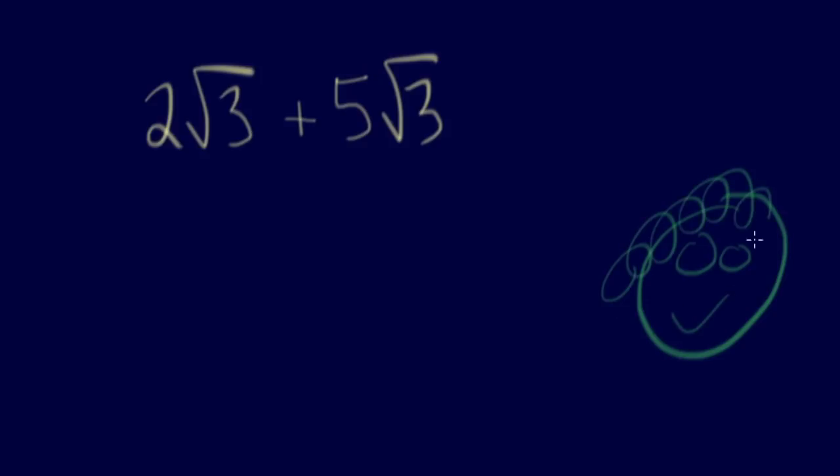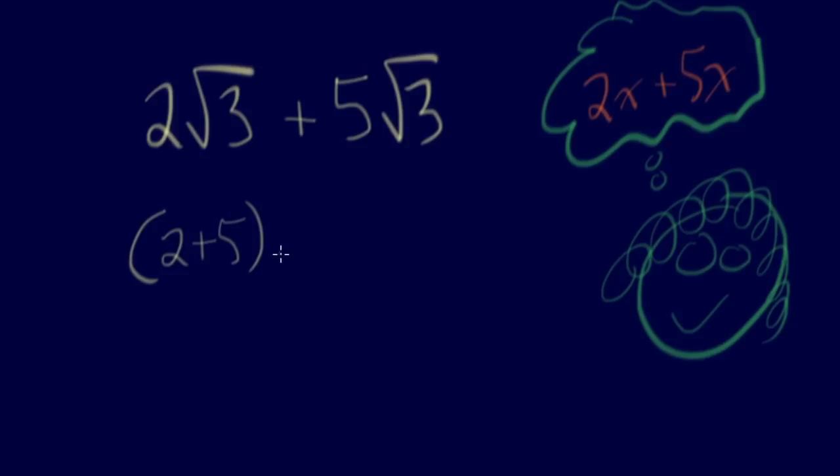Let's start off nice and simple. Let's say you had 2 root 3 plus 5 root 3. I want you to think of the root 3 - here's a little kid thinking about radicals. I want you to think of this question as 2x plus 5x. What I've done is replaced the root 3's with x's. When you're thinking about combining or adding and subtracting radicals, the radicand has to be the same in order to do that, just like with variables. Both these terms are root 3's, so I just want to know how many root 3's are there. There's 2 plus 5 root 3's, so we say there are 7 root 3's. Make sense?